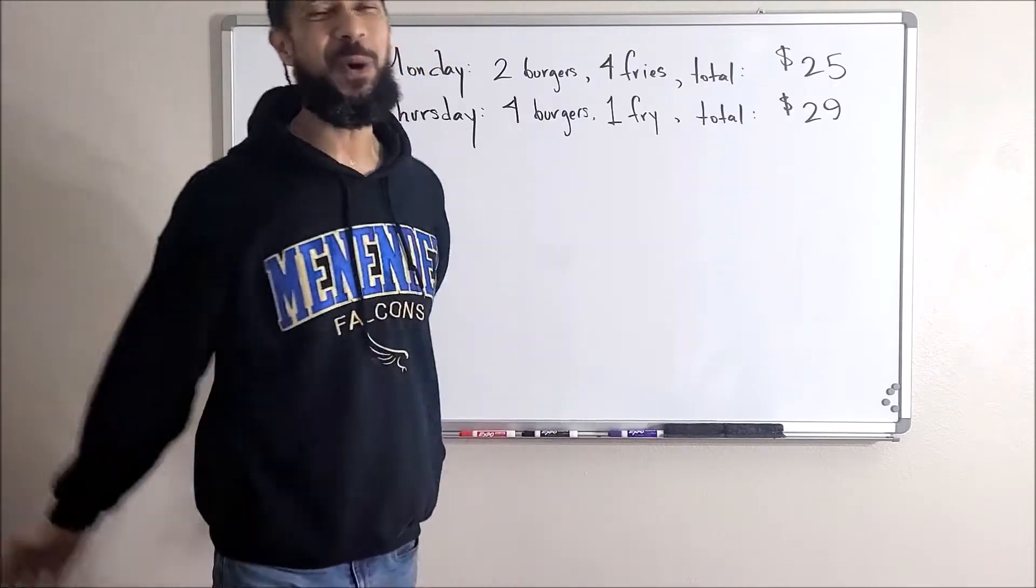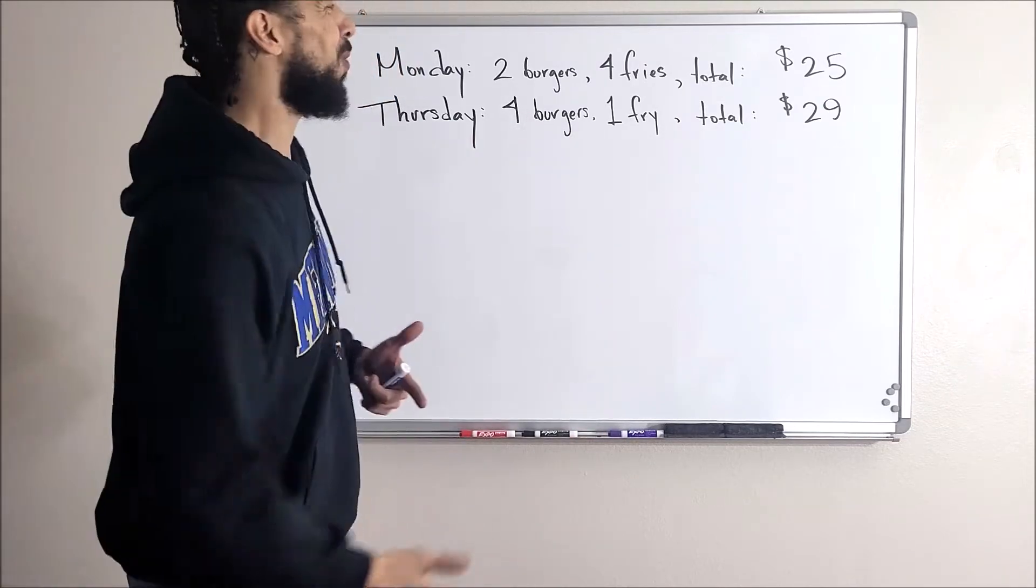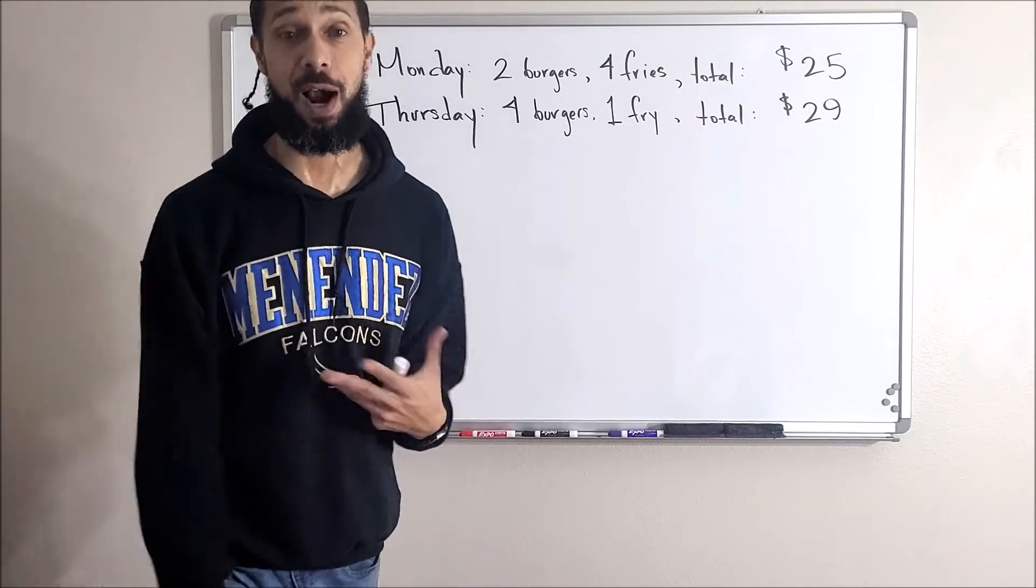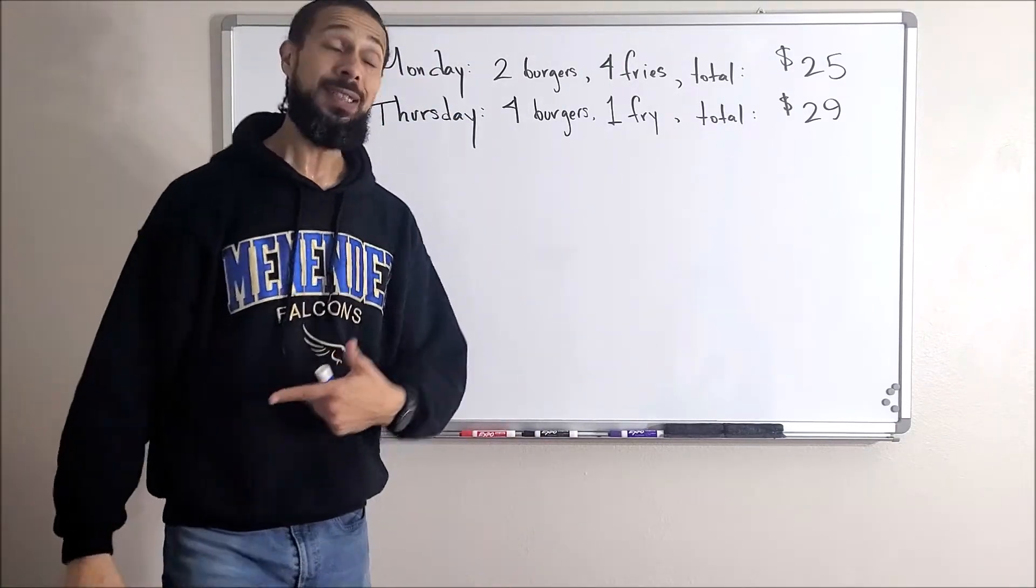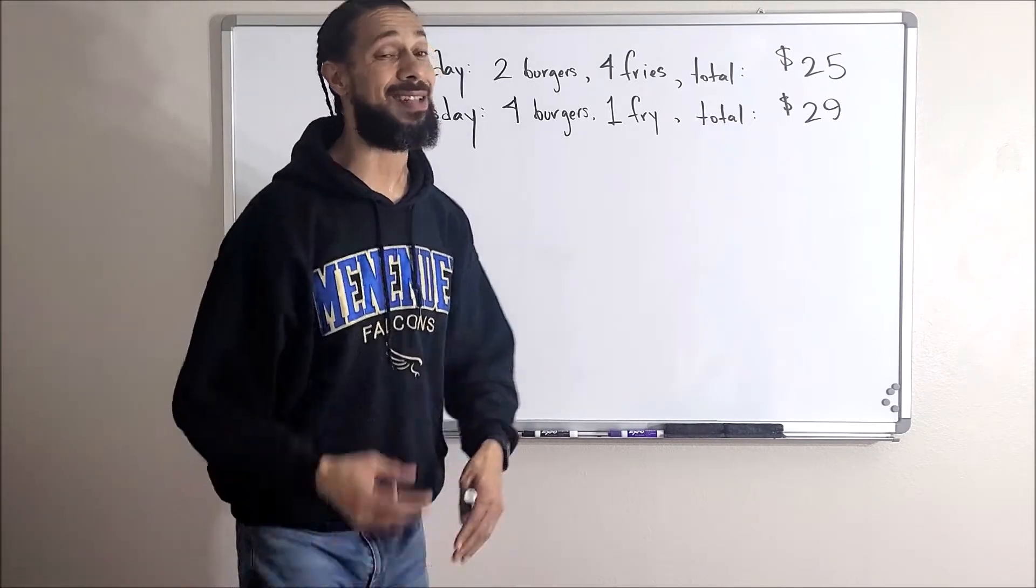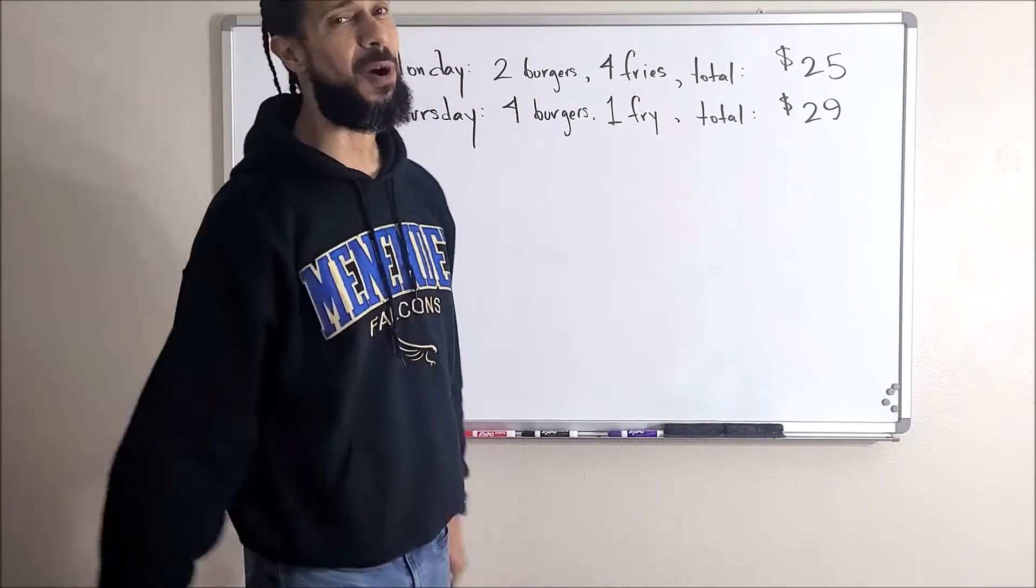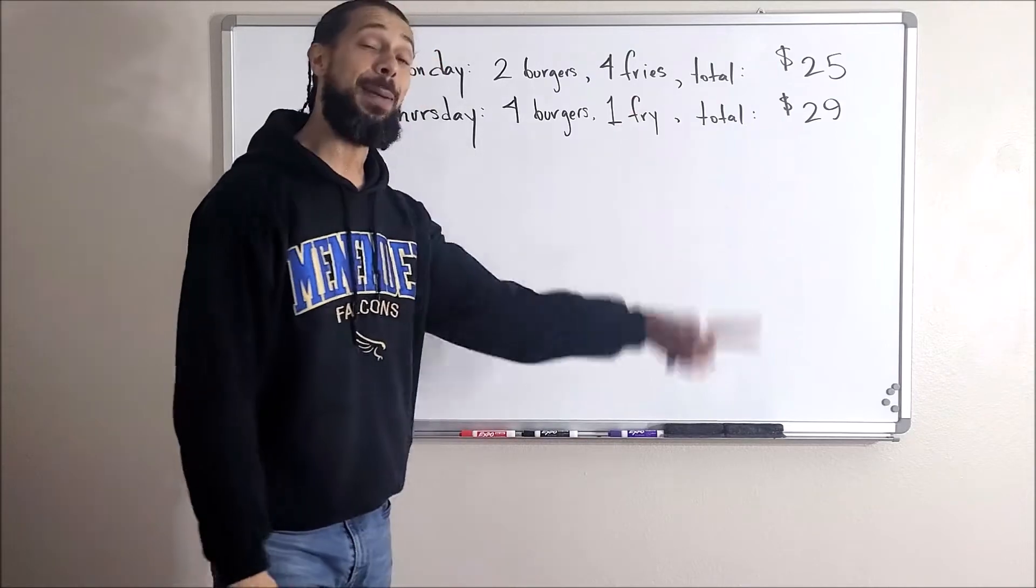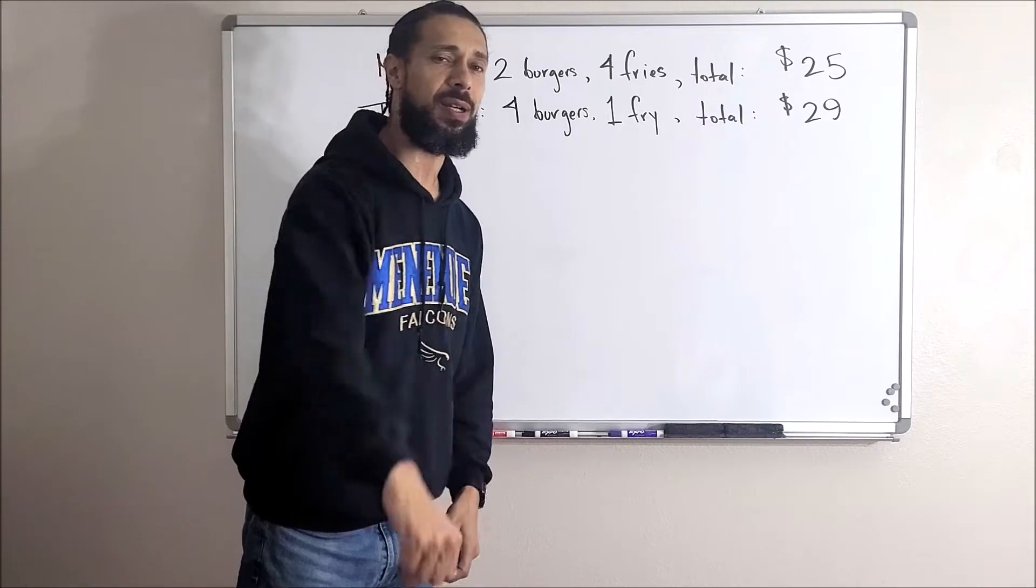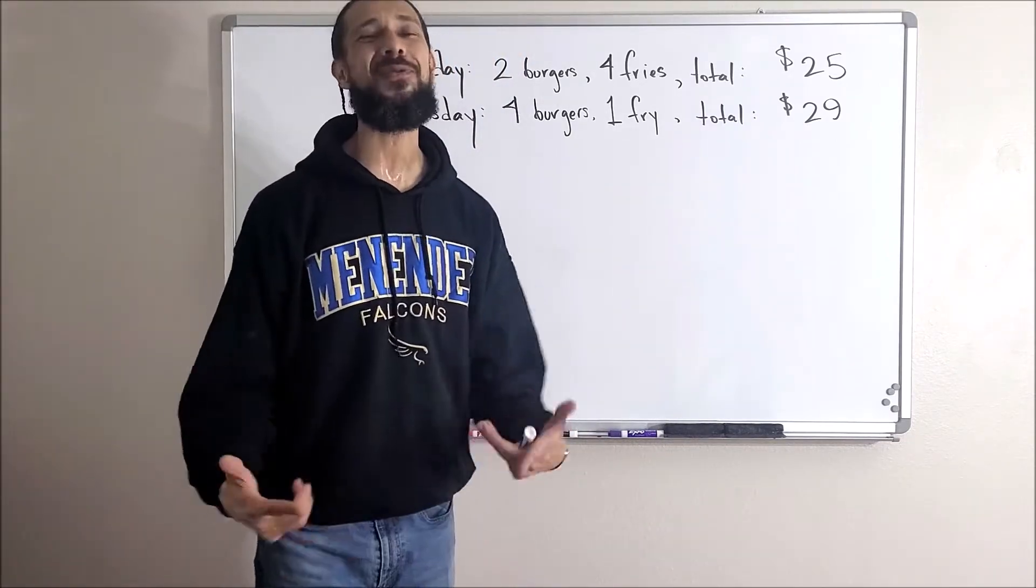Remember how much Mr. Herb loves burgers? So on Monday I take my family out to the burger spot. I get two burgers and four fries, and we spent $25 total. We liked the spot so we went back on Thursday. I got four burgers but we didn't like the fries so we only got one fries to split, and that tab came to $29. Now here's enough information for you to tell me how much does a burger cost and how much do fries cost. Let's set up some equations and see if we can figure this out.